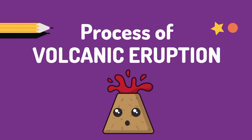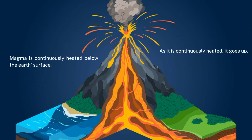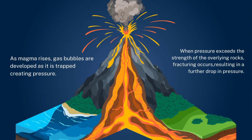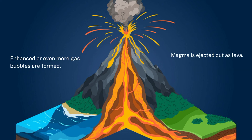Let us take a good look at the process of volcanic eruption. Magma inside the volcano is at a high temperature. As the magma is continuously heated, it goes up. As it rises, gas bubbles are developed. These gas bubbles are trapped and expanding, causing the molten material to swell, resulting in a gradual increase in pressure within the volcano. When the pressure exceeds the strength of the overlying rock, fracturing occurs. The resulting breaks lead to a further drop in confining pressure, which in turn causes enhanced gas bubbles to form. Then, magma is ejected out as lava.